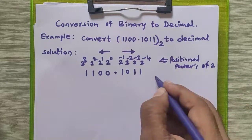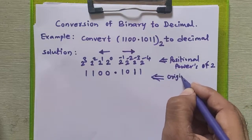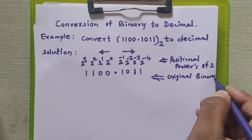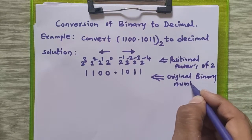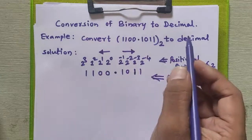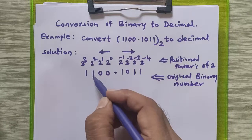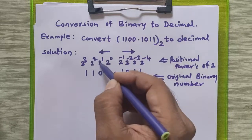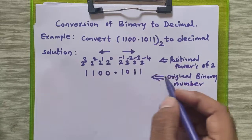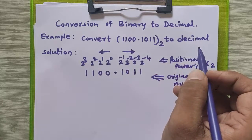This is our original binary number. To get the decimal equivalent, we will multiply each binary bit by the positional powers of two, and at last we are going to add all these product terms to get our exact decimal equivalent.